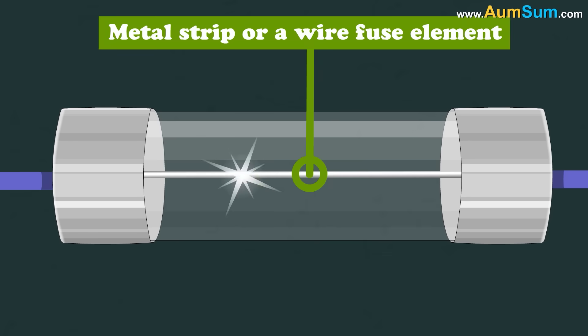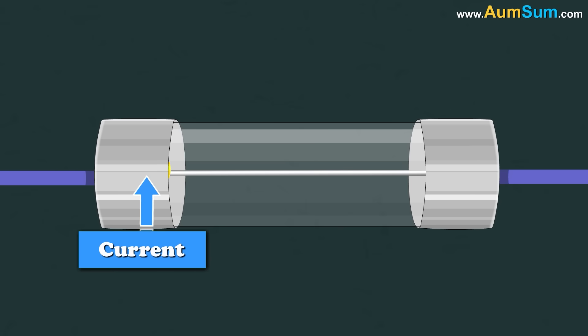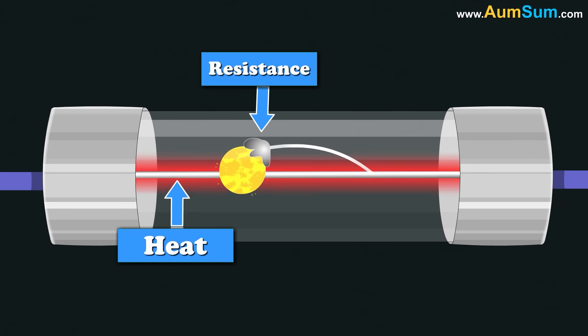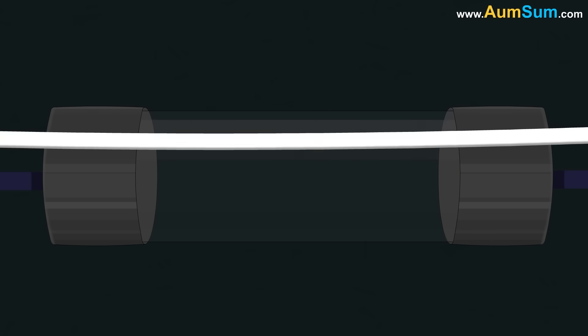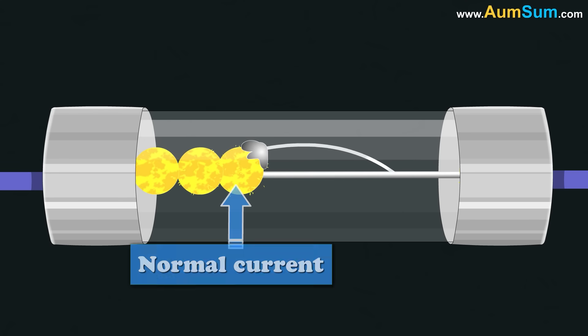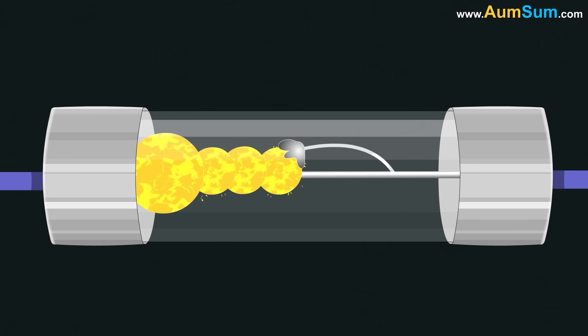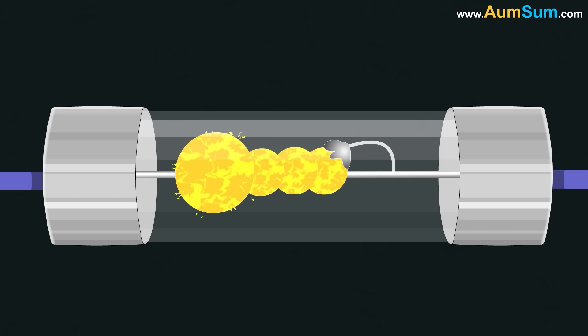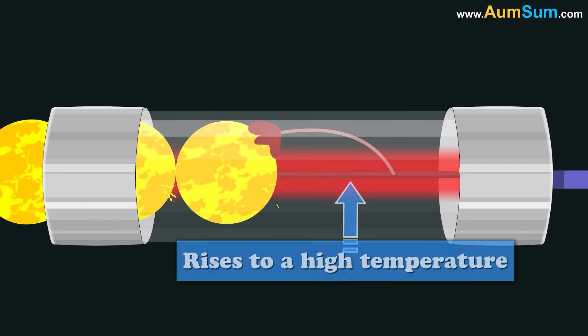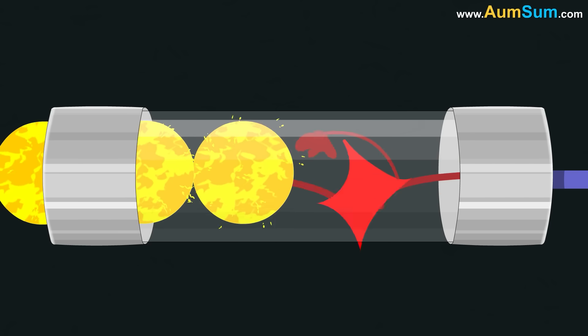A fuse consists of a metal strip or a wire fuse element. When current starts flowing through the fuse element, heat is generated due to resistance of the fuse element. The fuse element is constructed in such a fashion that when normal current flows or a small current spike occurs, it does not cause the fuse element to attain a high temperature.